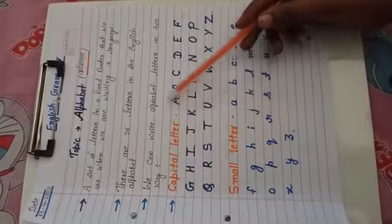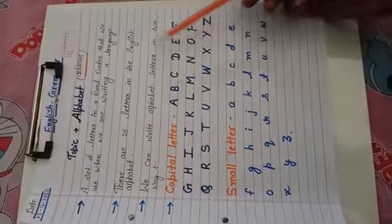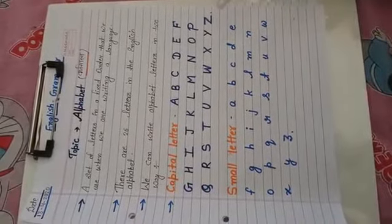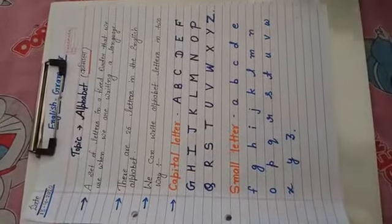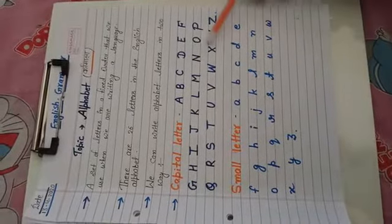Third point, we can write alphabet letters in two ways. Alphabet letters ko do tariqe se likha ja sakta hai. First way is capital letter and second way is small letter. You can see here how you can write capital letter and how you can write small letter.